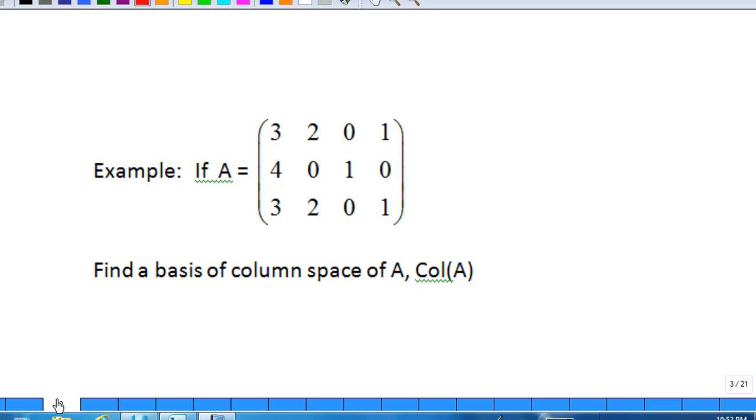Here is the example. If A is equal to 3 4 3, 2 0 2, 0 1 0, and 1 0 1, find a basis of the column space of A.